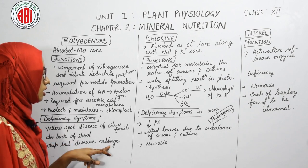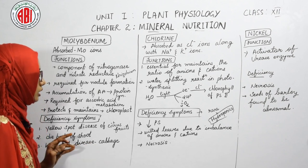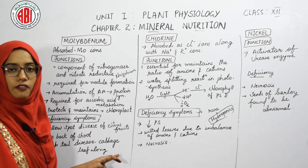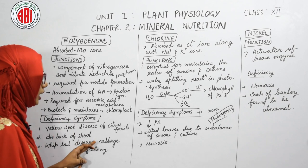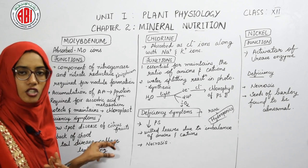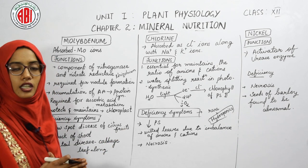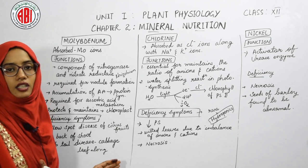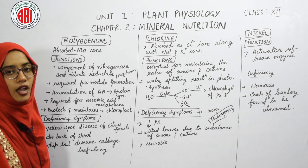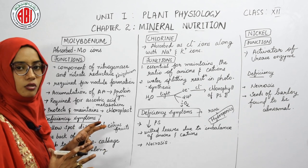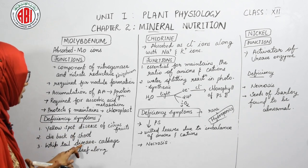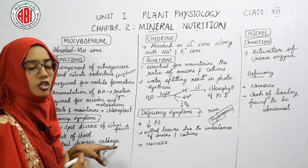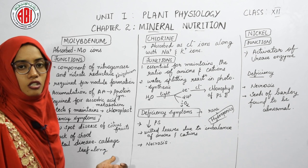A specific disease seen only in cabbage due to molybdenum deficiency is whiptail disease. Normally cabbage has broad leaves, but in deficiency, the leaves become abnormally longer, which reduces the economic value of the cabbage. Yellow spot disease is specific to citrus fruits, while whiptail disease is specific to cabbage.